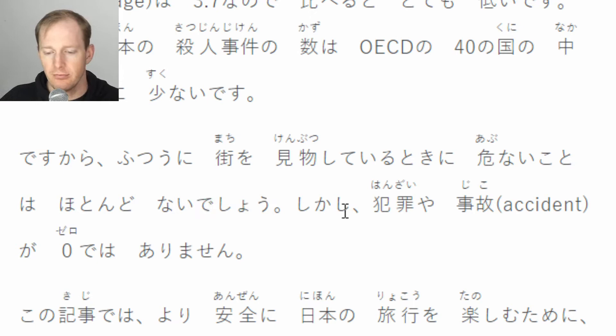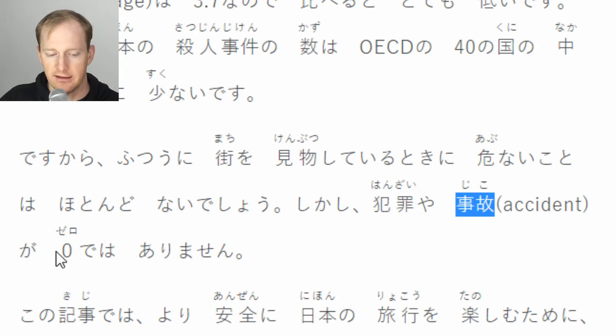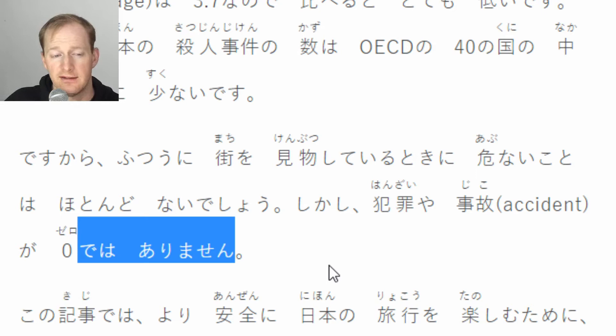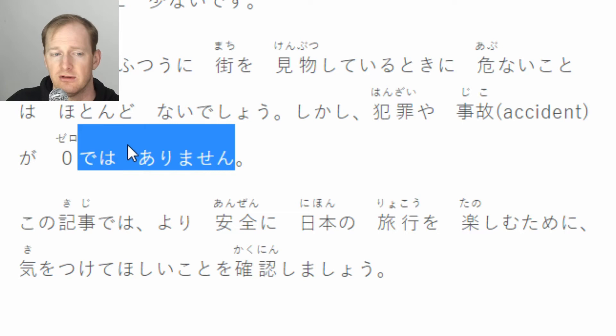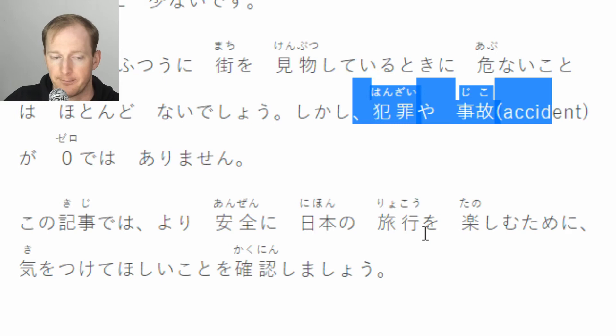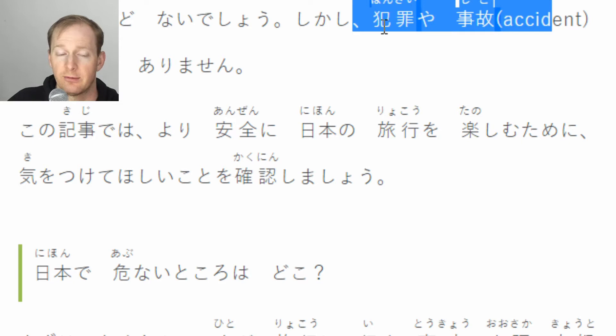しかし - 'however.' 犯罪 is crime, 事故 is accident, like a traffic accident. 犯罪や事故がゼロではありません - this is written Japanese so it uses 'dewa arimasen' which is the formal version of 'janai.' If you're speaking you'd just say じゃないです, but they're just saying it's not zero. Bad things can still happen to you in Japan; it's just very unlikely, especially in terms of crime.